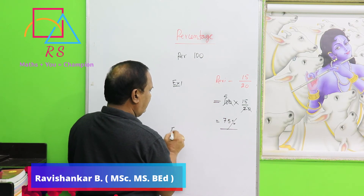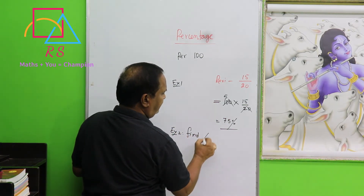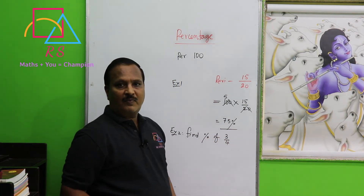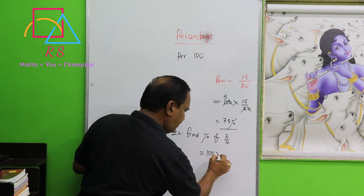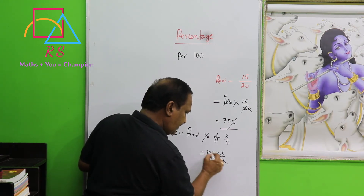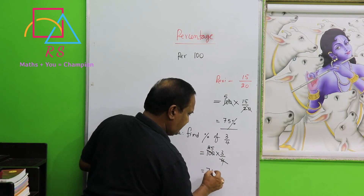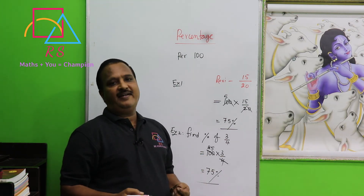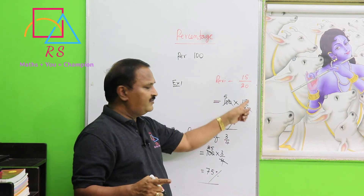Let me go to one more example. Example 2: find the percentage of 3 out of 4. Directly, you just multiply 100 × 3 / 4. So 4 goes into 100 twenty-five times, which equals 75 percent.